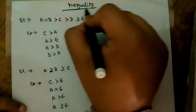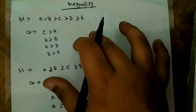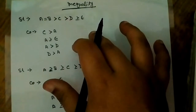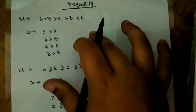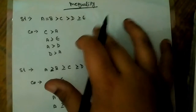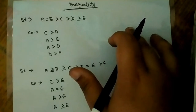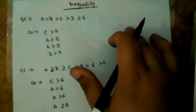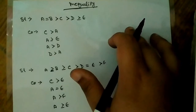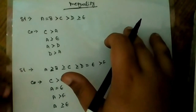Inequality means you have to decide whether the relation between two entities is true or false — whether one is greater than or lesser than, whether one is greater than or equal to, whether one is lesser than or equal to, whether one is equal to, or whether there is no relation between them.